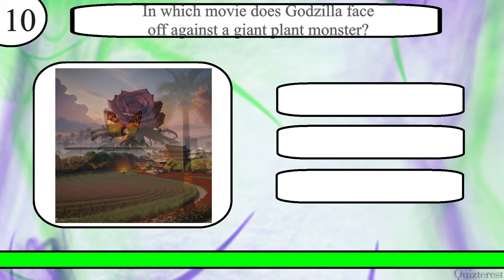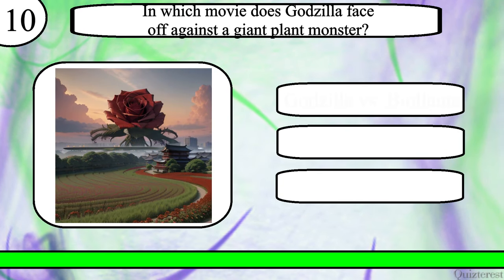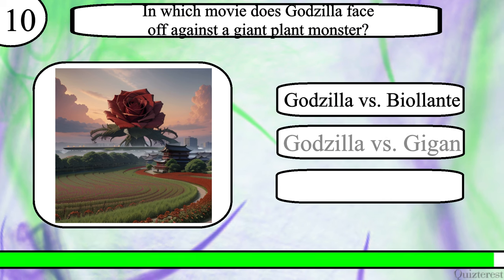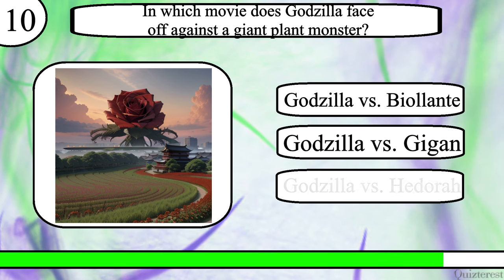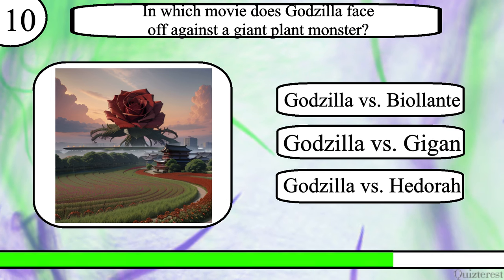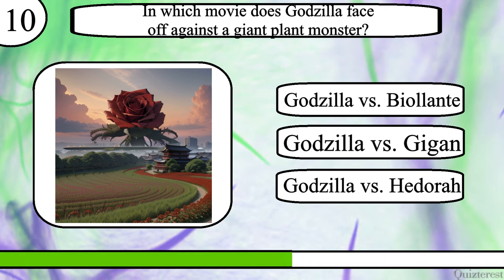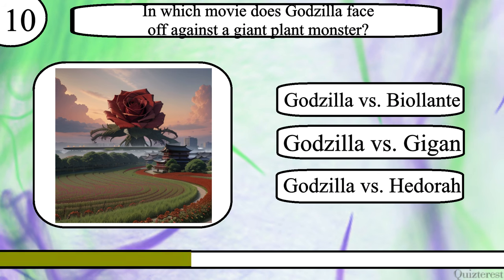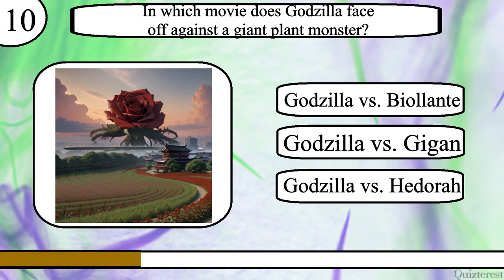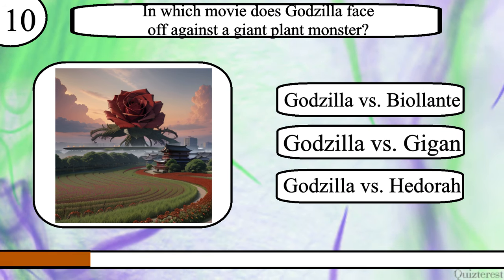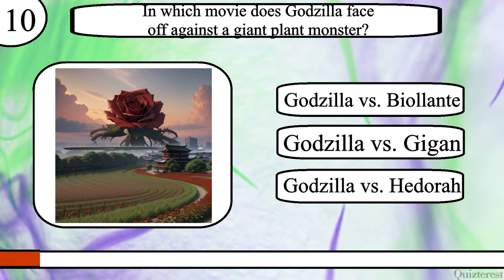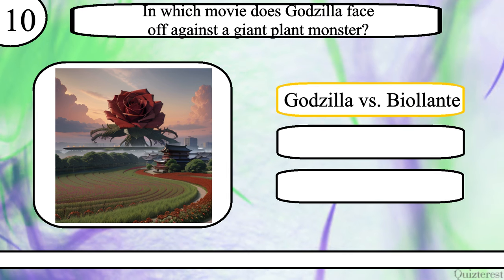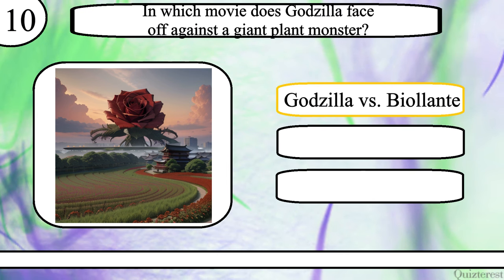Question 10. In which movie does Godzilla face off against a giant plant monster? Godzilla vs. Violante, Godzilla vs. Gigan, or Godzilla vs. Hedorah? The correct answer is Godzilla vs. Violante.